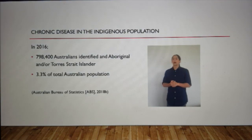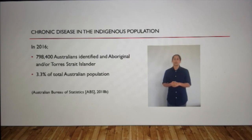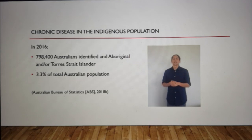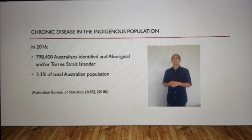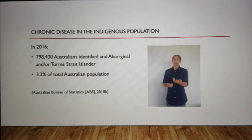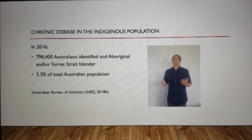This section we're going to talk about chronic disease in the Indigenous population. First, let's have a look at how many Indigenous people there are. In June 2016, there was estimated to be 798,400 people in Australia who considered themselves Aboriginal and Torres Strait Islander — that makes up 3.3% of the total Australian population.